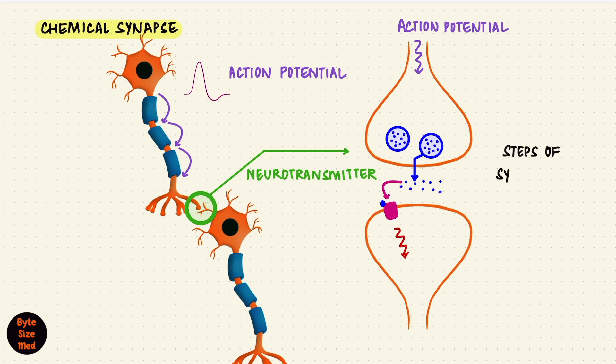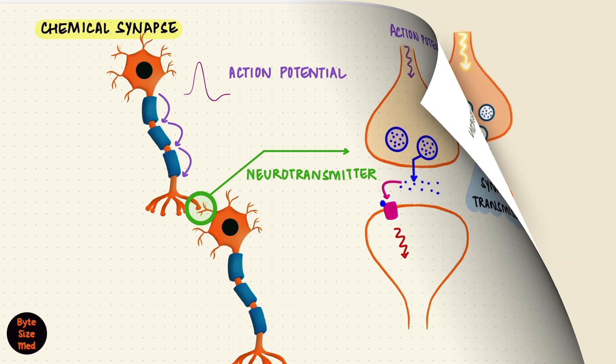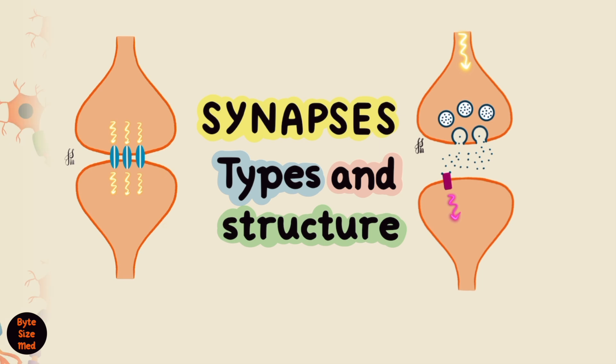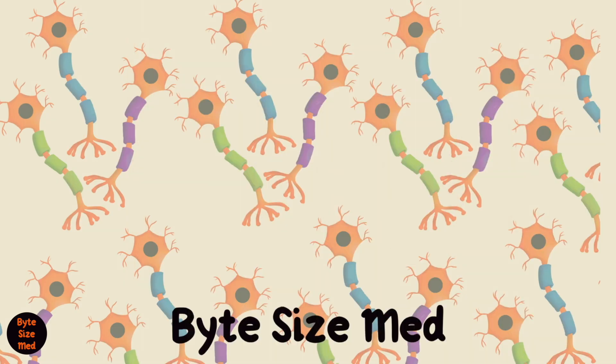In part two, we'll learn about the steps of synaptic transmission at a chemical synapse, starting with the presynaptic neuron. I hope this video was helpful. If it was, you can give it a like and subscribe to my channel. Thanks for watching, and I'll see you in the next one.